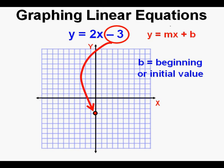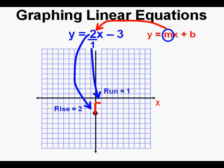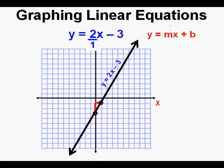We take the negative 3 and mark the y-intercept along the y-axis. Then we look at the slope m, which is 2. To use the slope of 2, we make a fraction out of it: 2 over 1. Starting at the y-intercept, we move up 2 — the rise — and to the right 1 — the run. We mark the second point at the end of that run, and now we can draw a line through the two points. This is the graph of y equals 2x minus 3.